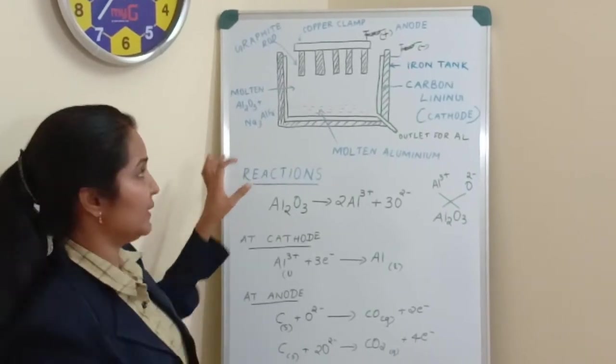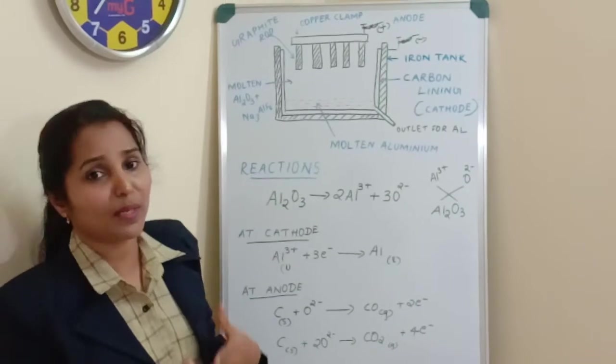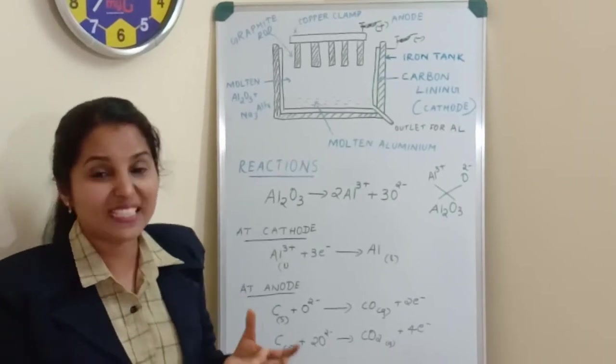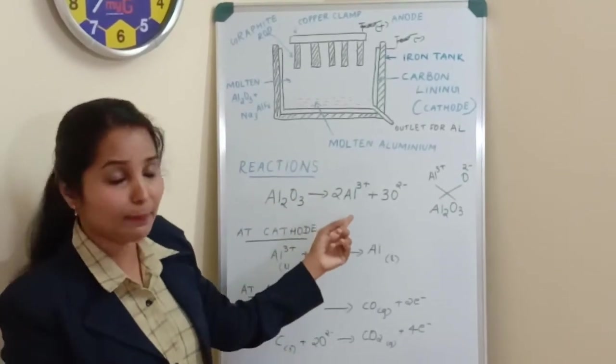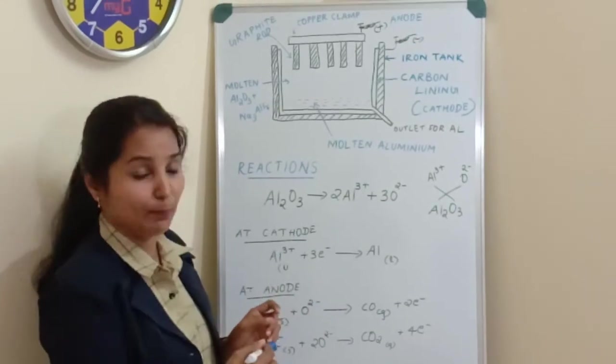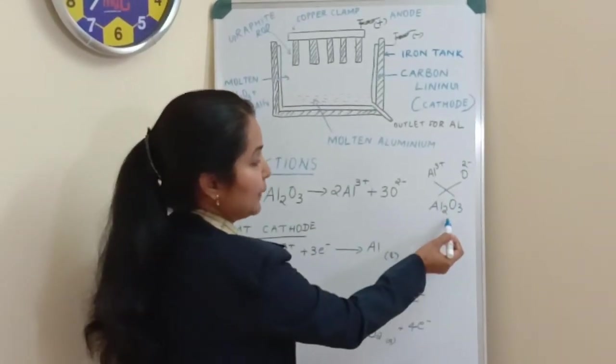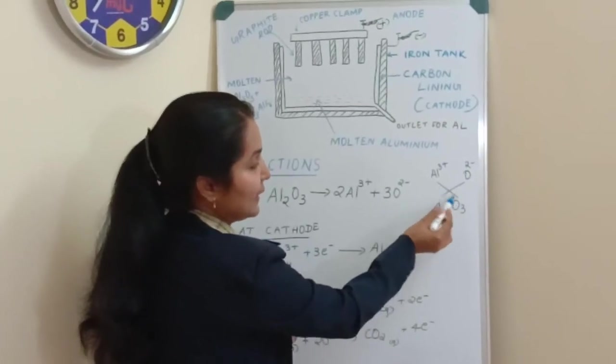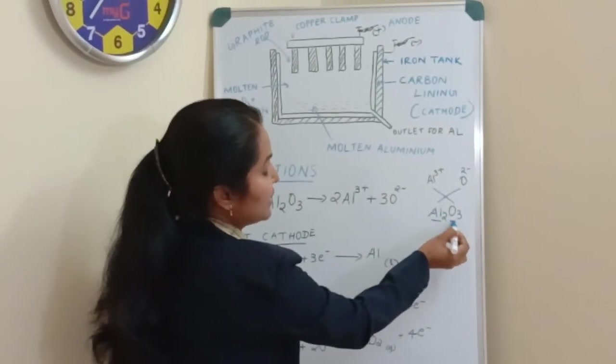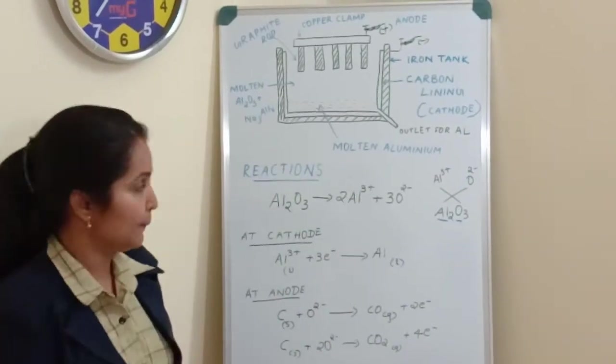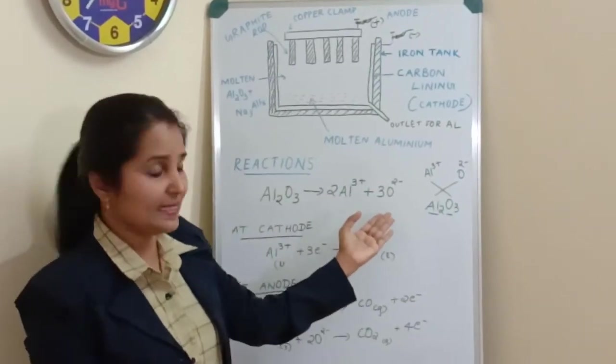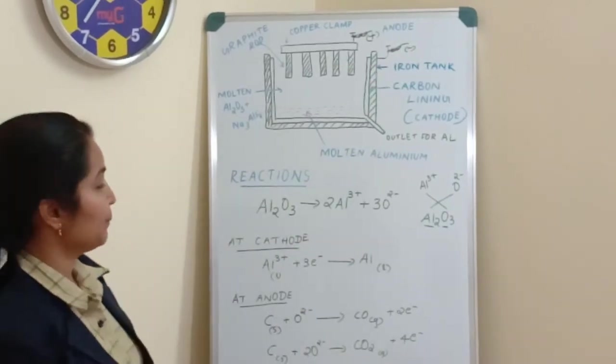And now what happens? What are the reactions that happen when the electricity starts flowing through it? When electricity passes, this alumina Al2O3 will be dissociated or will be split up into Al3+ aluminium ions and O2− ions oxide ions. You know how it gets Al3+ charge and O2− charge because it is Al2O3. Al2O3 will be split into 2 ions, one is positively charged and the other one is negatively charged. Al3+ and O2− ions.